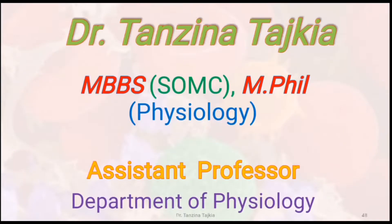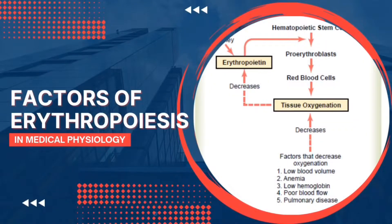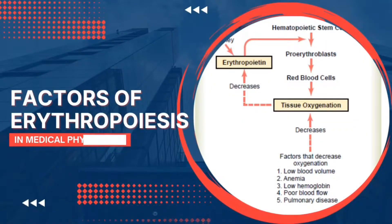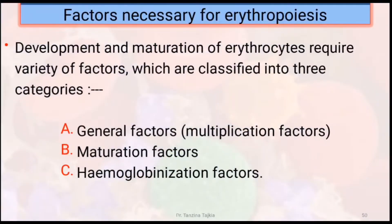Bismillahirrahmanirrahim. Today, I will discuss about the factors necessary for erythropoiesis. Development and maturation of erythrocytes require a variety of factors. These are classified into three categories.